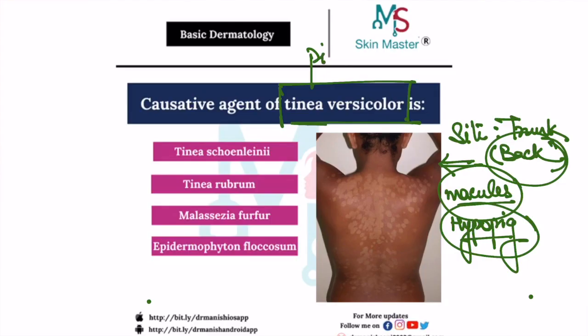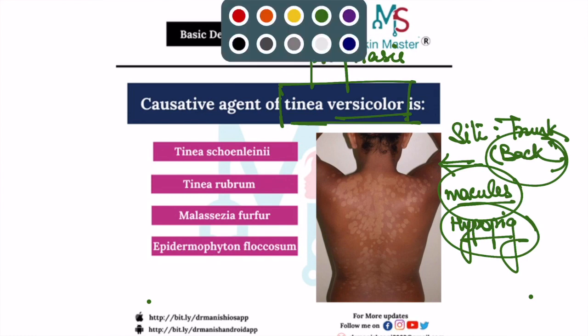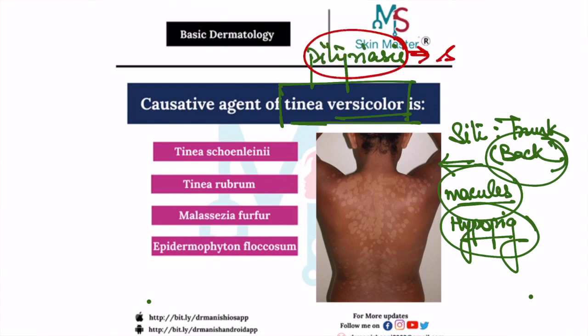Yes, this is tinea versicolor, which is also known as pityriasis versicolor. From the name of this condition you can easily remember two important points: first, 'pityriasis' means scaling, so the lesions are scaly — if you scratch the lesions you will find very fine scales come out. 'Versicolor' means different colors, so different colors can be seen here. The lesions are hypopigmented but sometimes they can be hyperpigmented also, so both types of lesions can be seen in pityriasis versicolor.